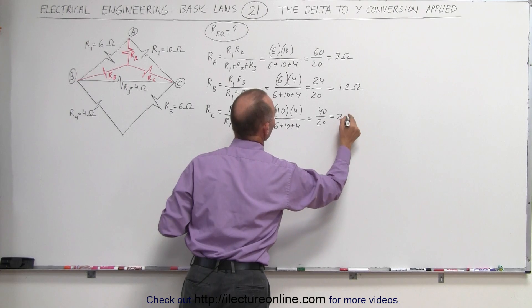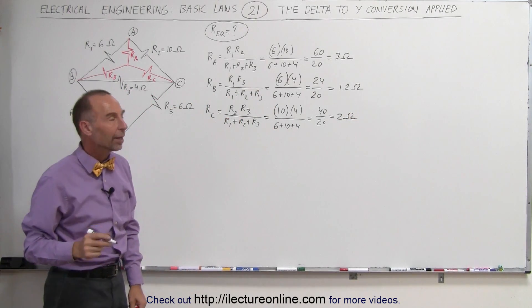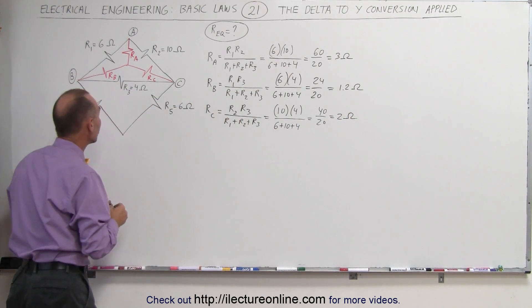So now we have the value of the three resistors in the Y conversion, and let's redraw the circuit.